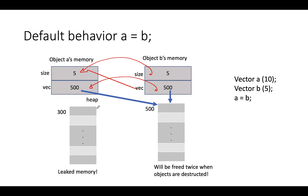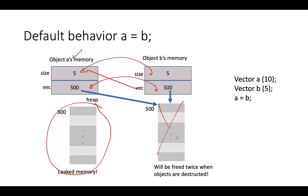There are a number of issues with this behavior. Number one, this space is now leaked because we don't have access to it anymore — it's leaked memory. The other issue is that both objects are no longer independent; they share this space. As a consequence, when one object goes out of scope and frees this space, and then the other object later goes out of scope and tries to free the same space again — but it's already freed — that creates the double free problem, which causes the program to crash.